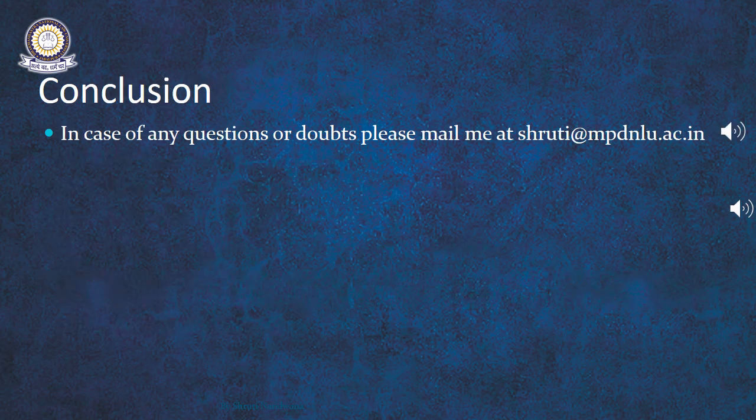In this presentation, we have dealt with the concept of vicarious liability, the concept of master-servant relationship, understood what a master and servant relationship is, who is a servant, the tests of how a master-servant relationship is differentiated from a relationship between a master and an independent contractor, and what course of employment means. We will deal with specific instances of master-servant relationship, case laws relating to master-servant relationship, and the principal-agent relationship and vicarious liability in the next classes. If you have any queries, doubts or any feedback, please mail me at shruti@mpdnlu.ac.in.